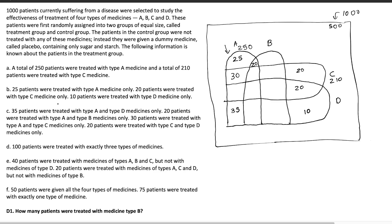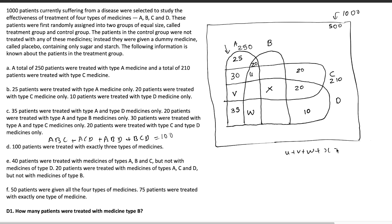100 patients were treated with exactly 3 types of medicines. The four combinations are: A, B, C only (named U); A, C, D only (named V); A, B, D only (named W); and B, C, D (named X). So U + V + W + X = 100. From the next point: 40 patients were treated with A, B, and C but not D, so U = 40. And 20 patients were treated with A, C, and D, so V = 20.